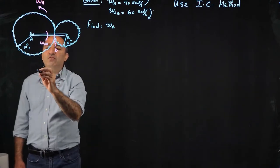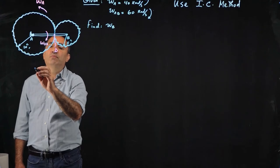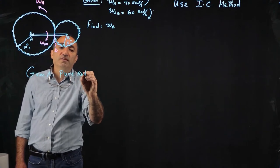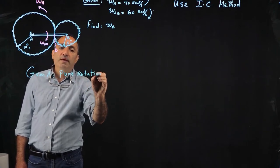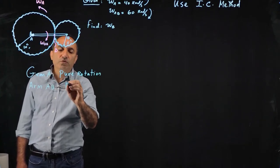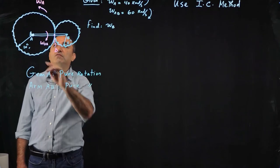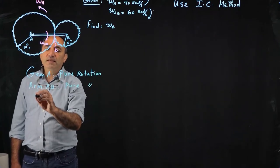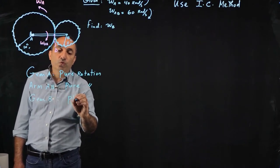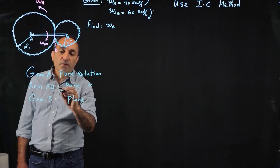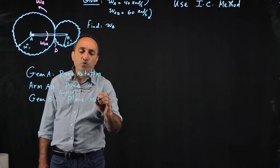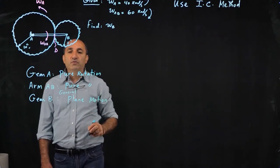So I did this also in the other video. If we classify the type of motion we have, gear A's motion is pure rotation since it's fixed at A. And arm AB connecting the two gears is also pure rotation because it's also fixed at A. And then that leaves gear B, which is going through combination of translation and rotation. We refer to that as general plane motion, combination of translation and rotation.